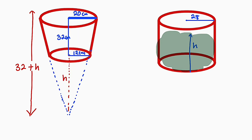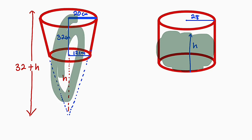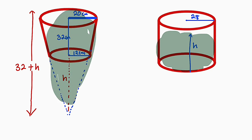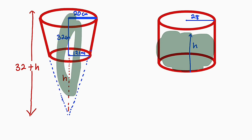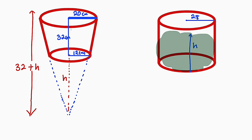We are going to apply the idea of similar shapes in order to find h, because to find the volume of the frustum we need the volume of the entire big cone, then subtract the volume of the smaller cone. What is left will be the volume of the frustum. To do that, we need this h.